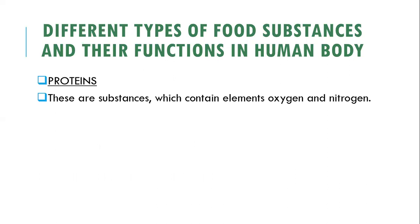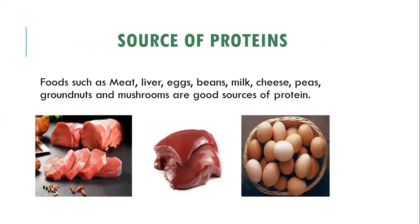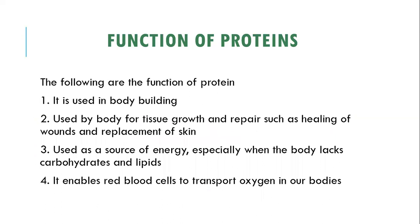Starting with proteins — these are substances which contain elements of oxygen and nitrogen. Sources of proteins include foods such as meat, liver, eggs, beans, milk, cheese, peas, and mushrooms. These are all very good sources of proteins.